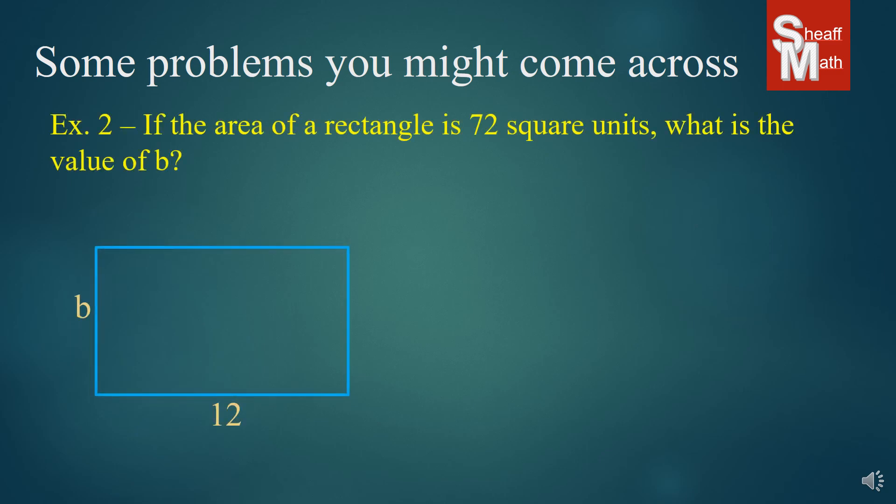Here's another example. If the area of a rectangle is 72 square units, what is the value of b? Now, rectangle base times height, and so 12 times b equals 72 as its area. So we divide 12 on both sides to solve for b, and we get b equals 6 units.